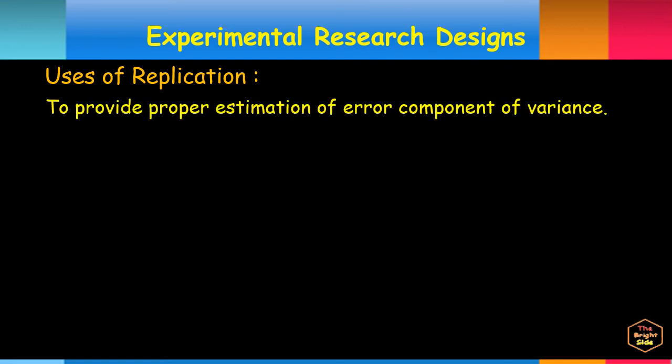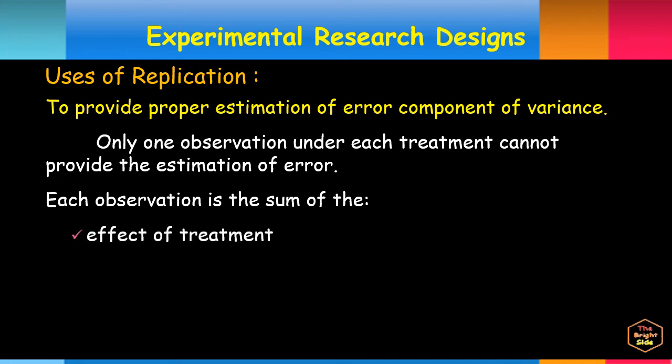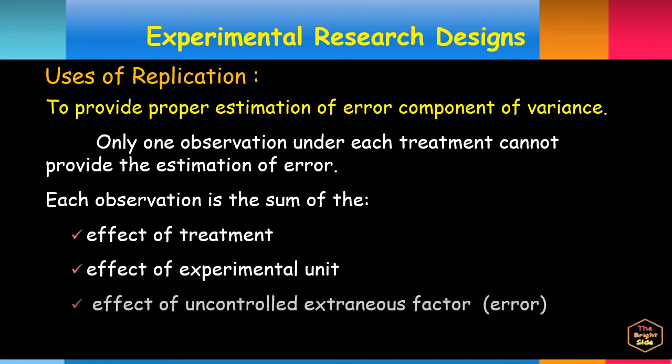We need replication, or multiple observations, because a single observation under each treatment cannot provide the proper estimation of error component of variance. Just remember that each observation is the sum of the effect of treatment, effect of experimental unit, and effect of uncontrolled extraneous factor, or error.